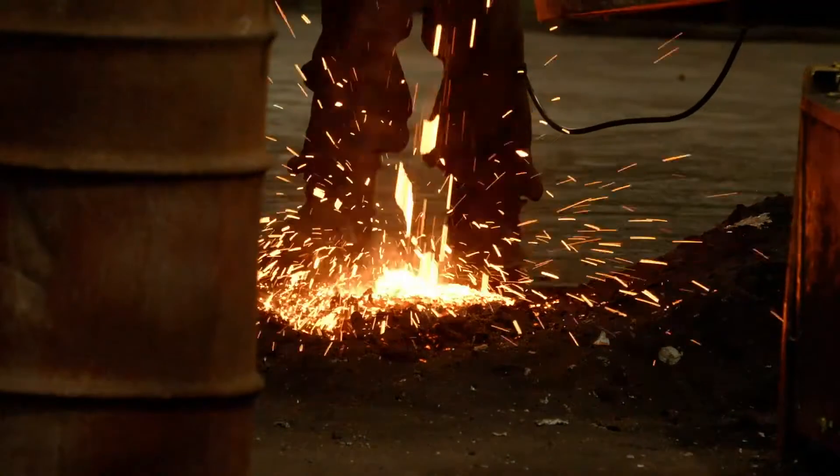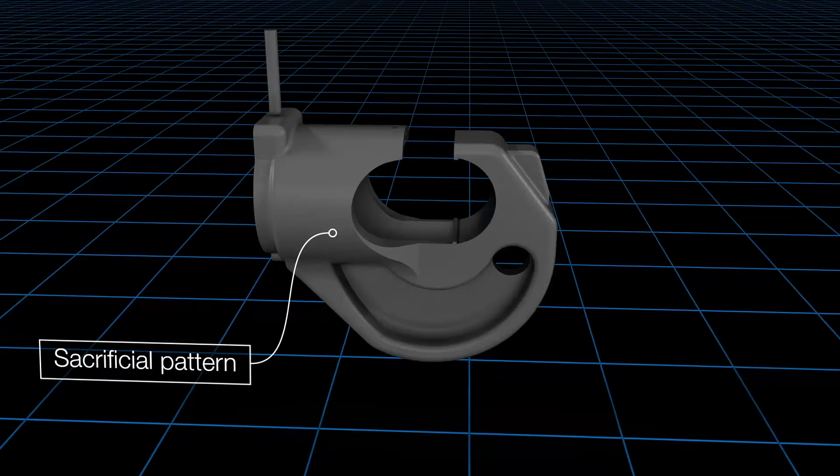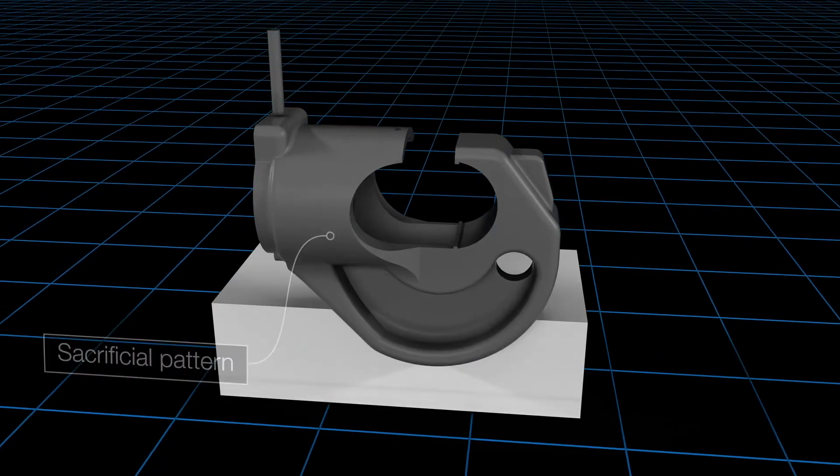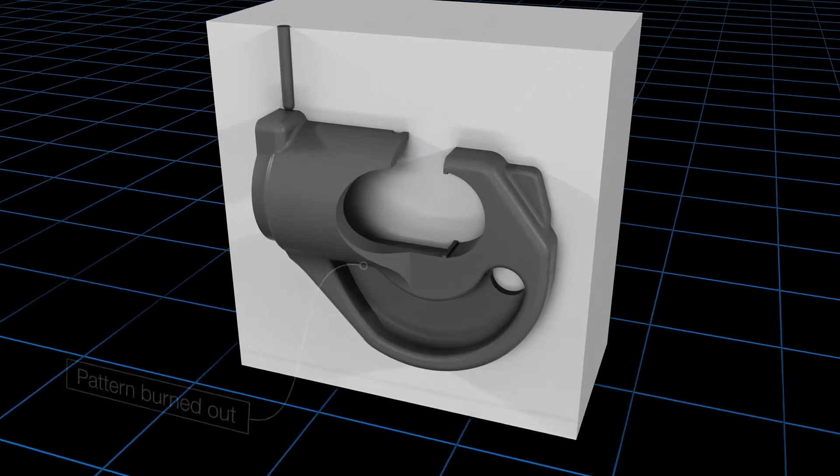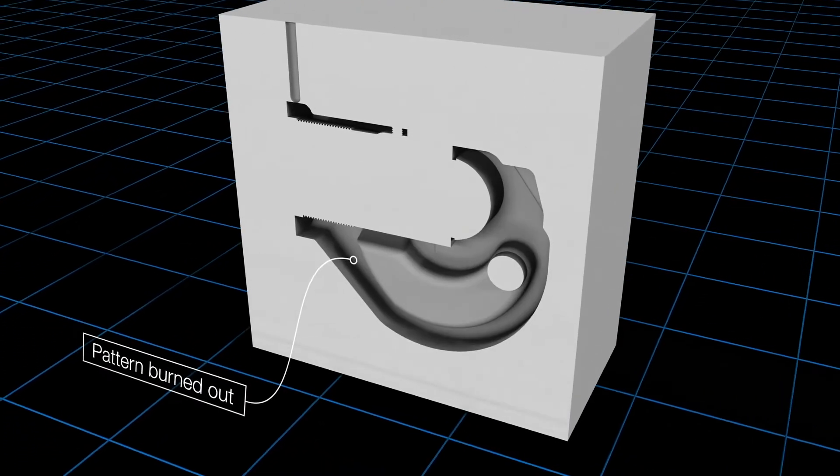Investment casting is a very traditional process of making metal parts. A pattern is created that's going to be sacrificial, and it's encased and dipped in ceramic, at which point the whole assembly is put into a furnace and the pattern is burned out.